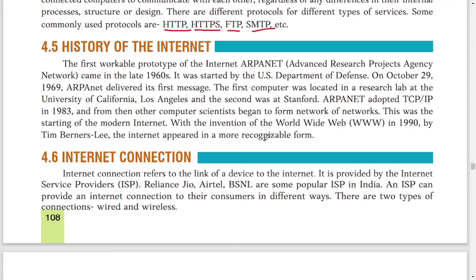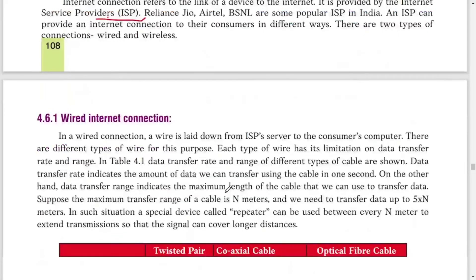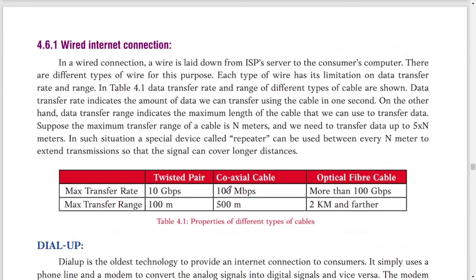To use internet on a laptop or computer, we need to get a connection from an ISP — Internet Service Provider. In India, popular ISPs include Reliance Jio, Airtel, and BSNL. We can also use mobile internet, but for uninterrupted and unlimited connection you should go for broadband, provided by Airtel, Jio, and BSNL. Some local providers are also available. Internet connections are of two types: wired and wireless.